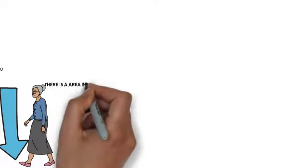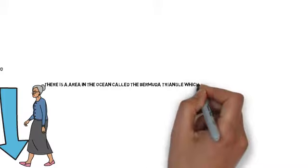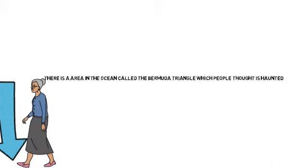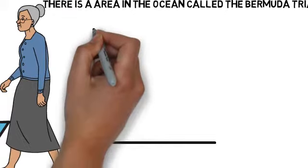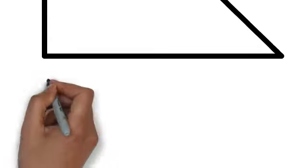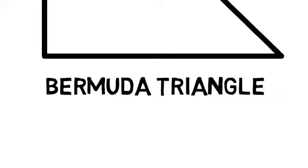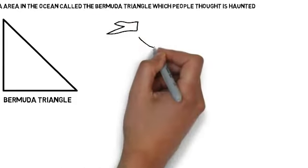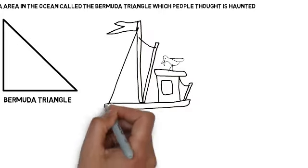The next fact is that there is an area in the ocean called the Bermuda Triangle, which people think is haunted. This fact is pretty cool because many people think the Bermuda Triangle is haunted, but it's probably not. The reason people think this is because lots of ships have wrecked there and many disasters happen.